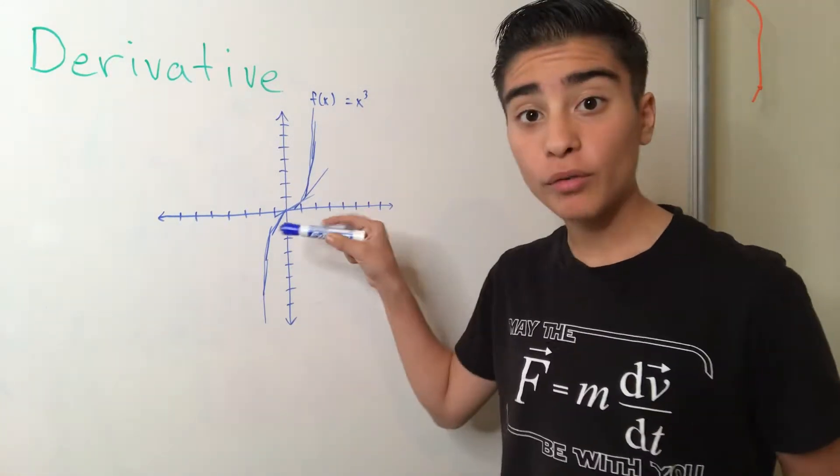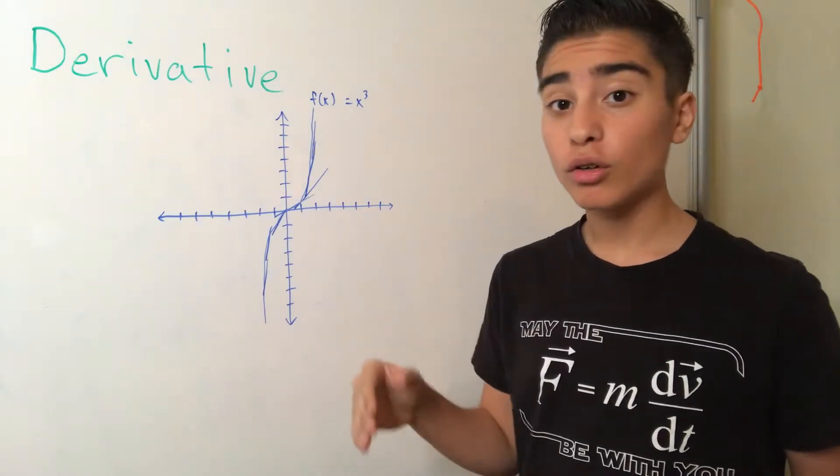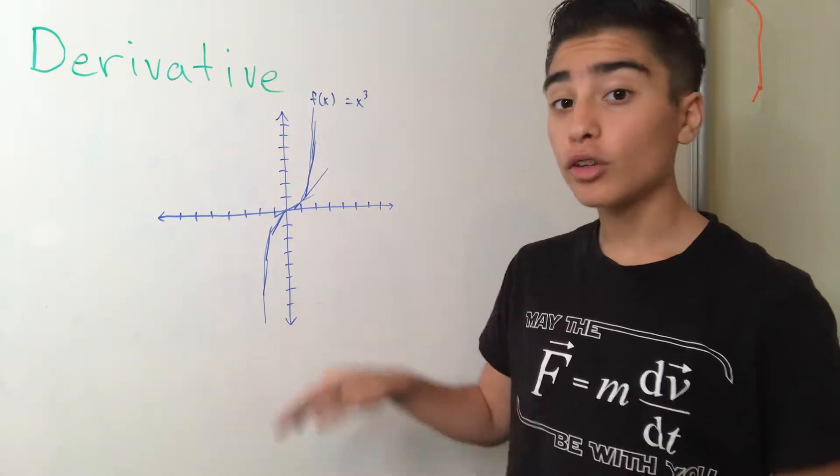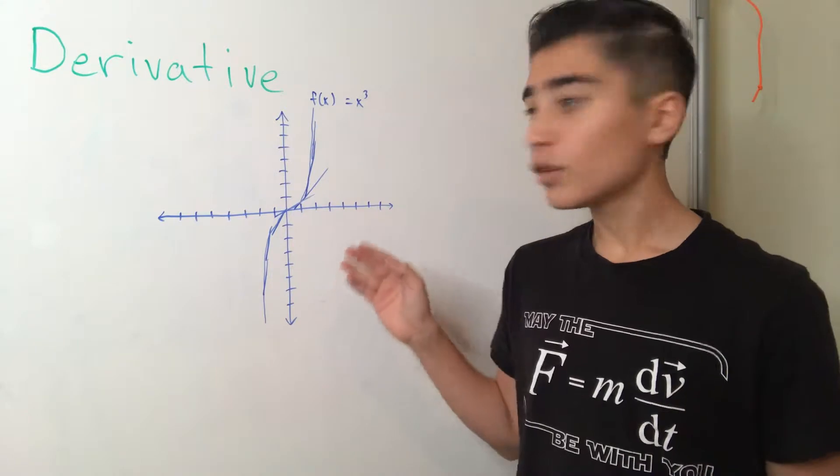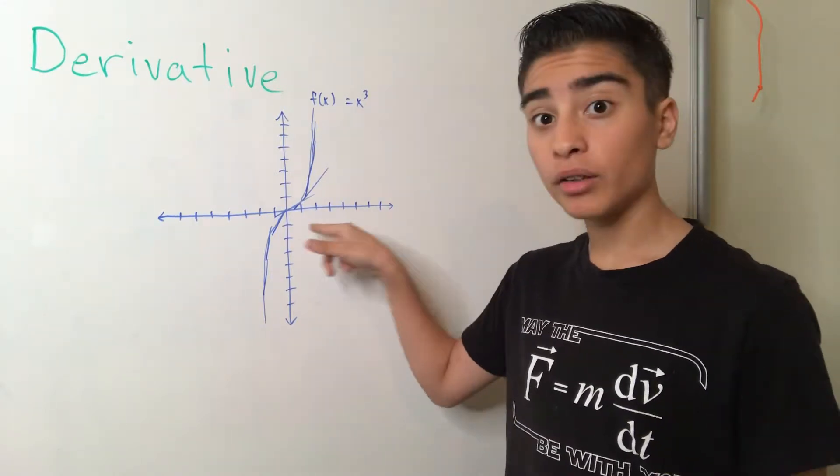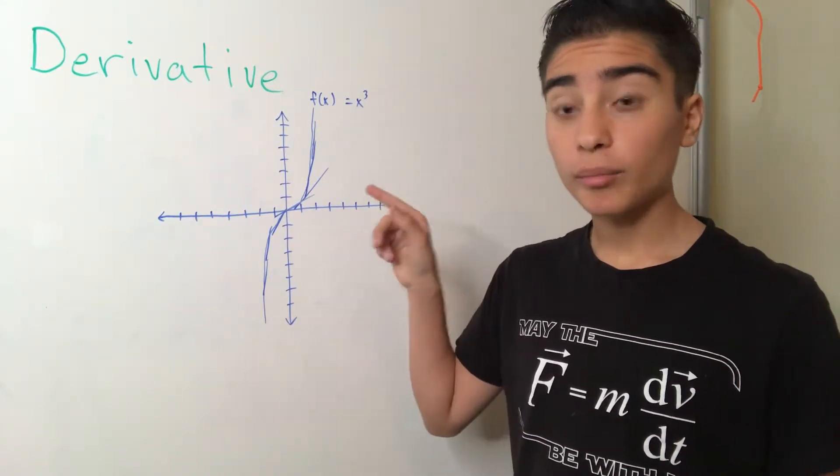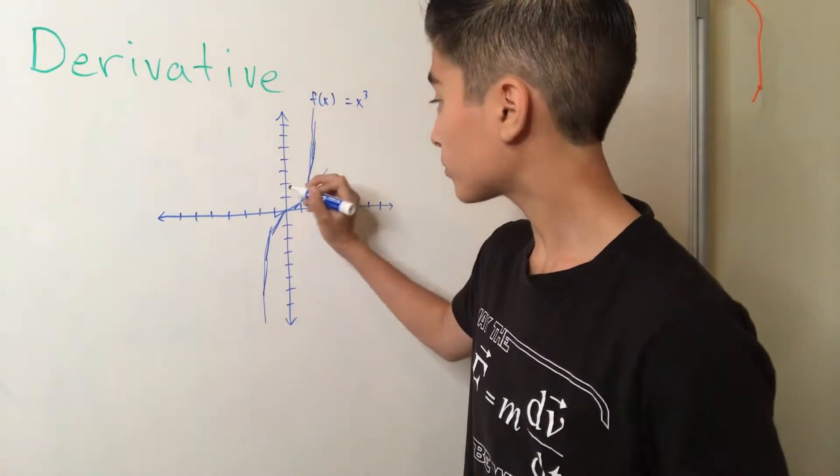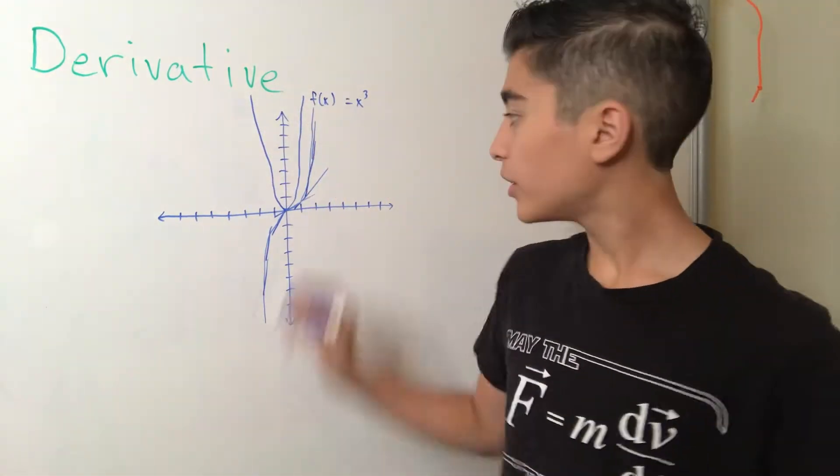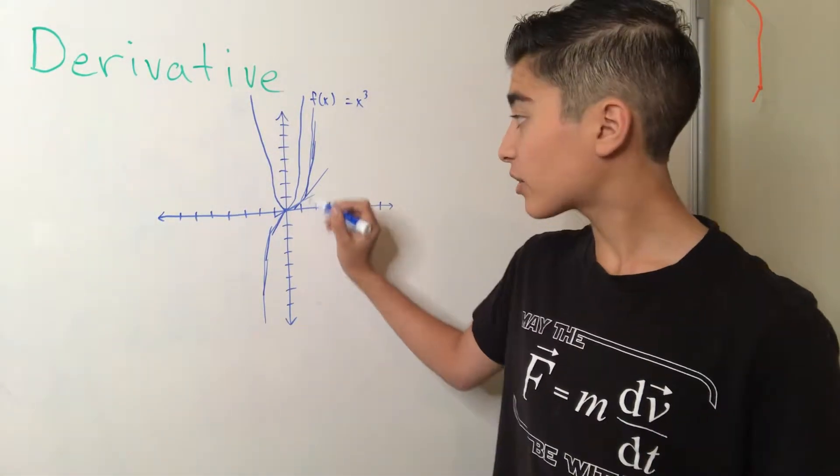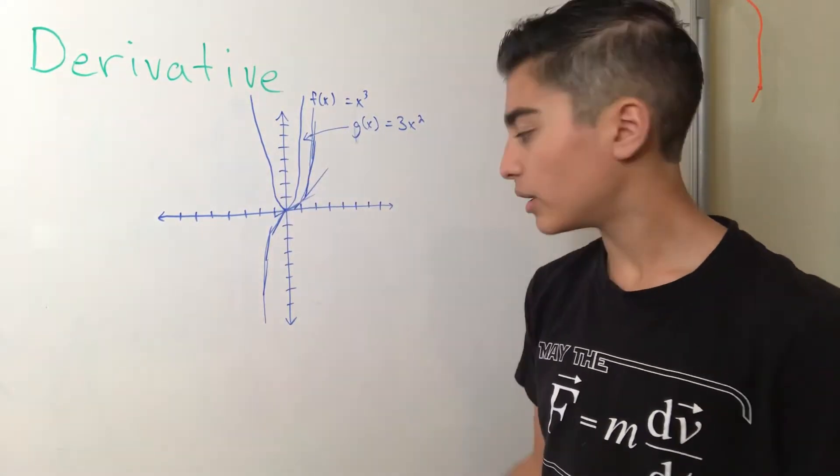So using the slope of each of these lines, we can create a new graph that shows us how this graph is trending. So, the new graph that is based entirely upon the slope of these tangent lines should look something like this. This is the graph of 3x squared. So what does this new graph mean?